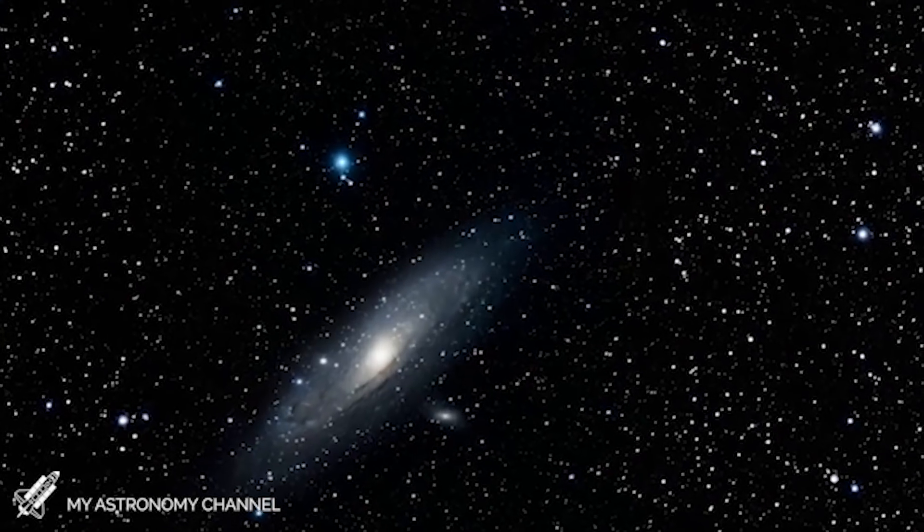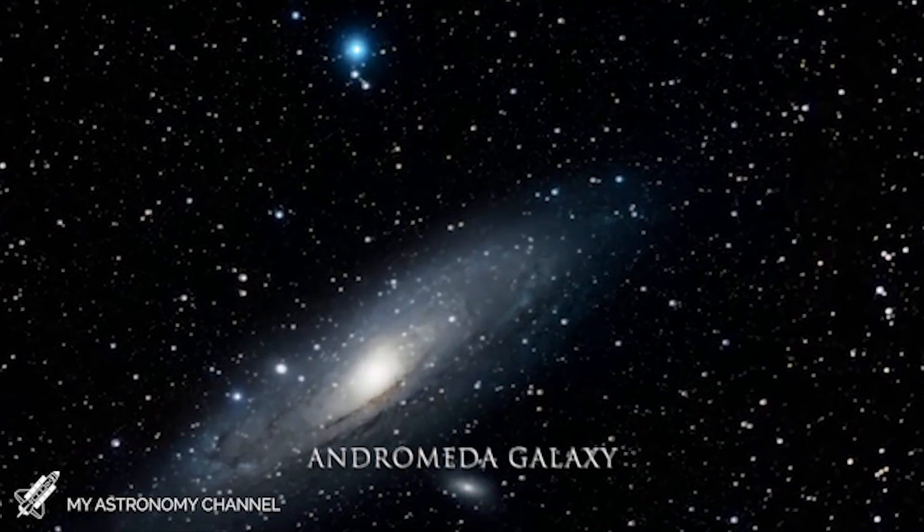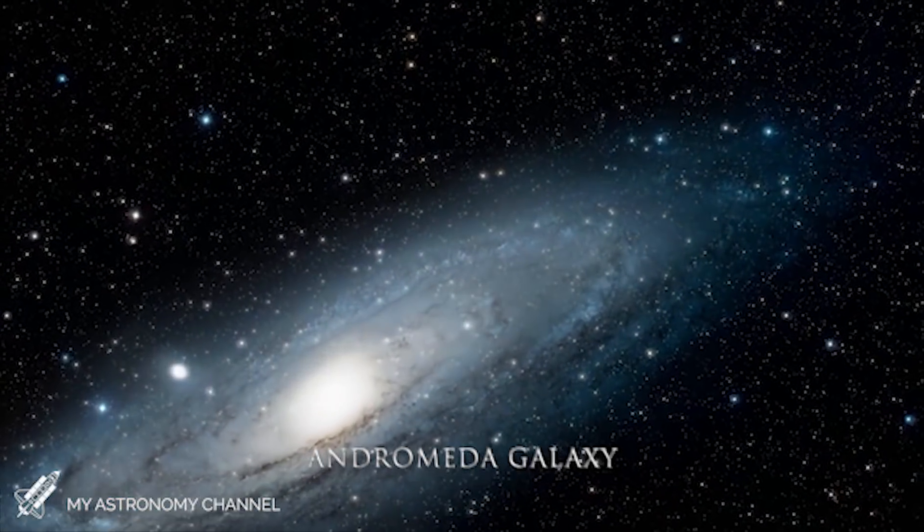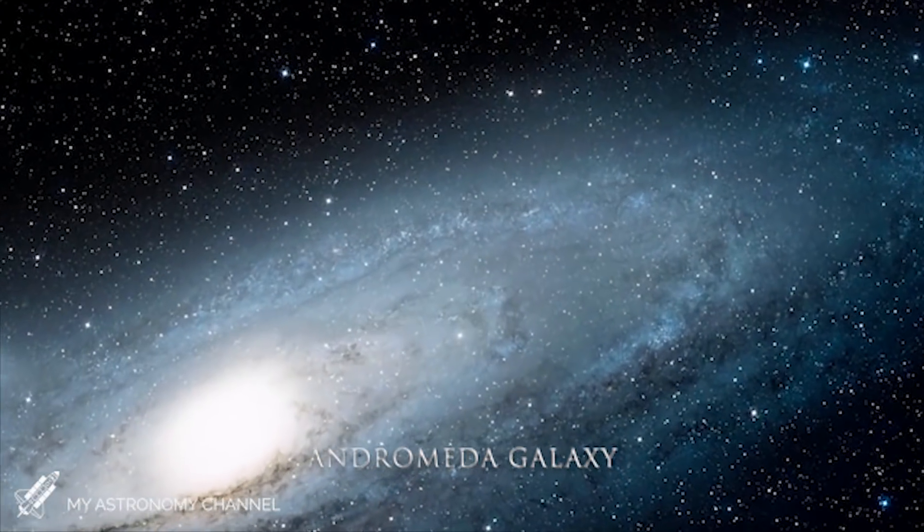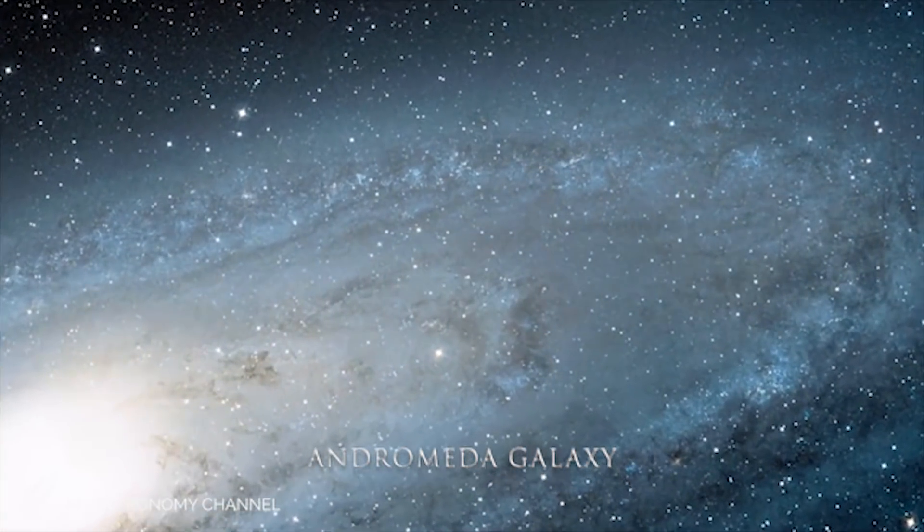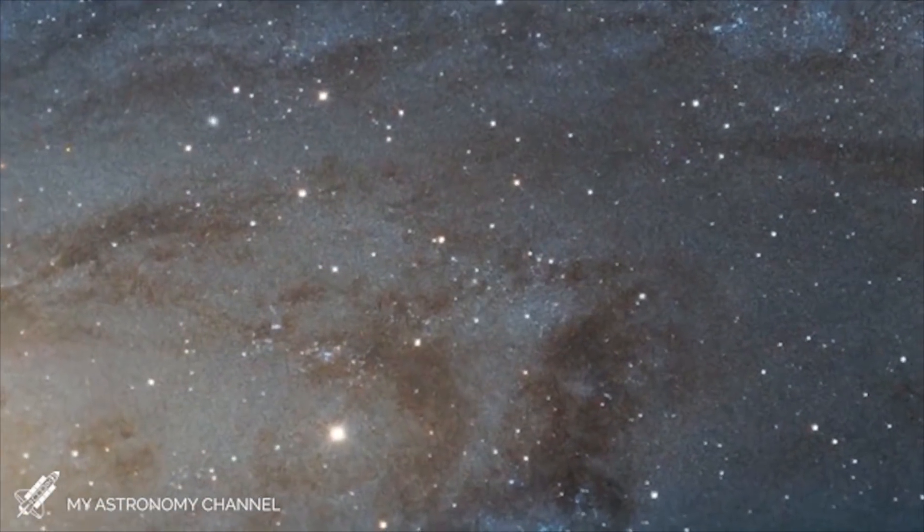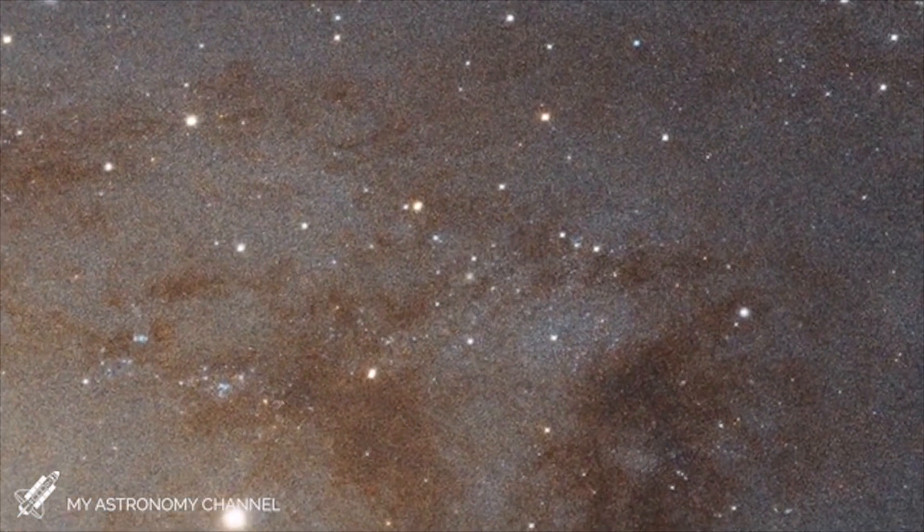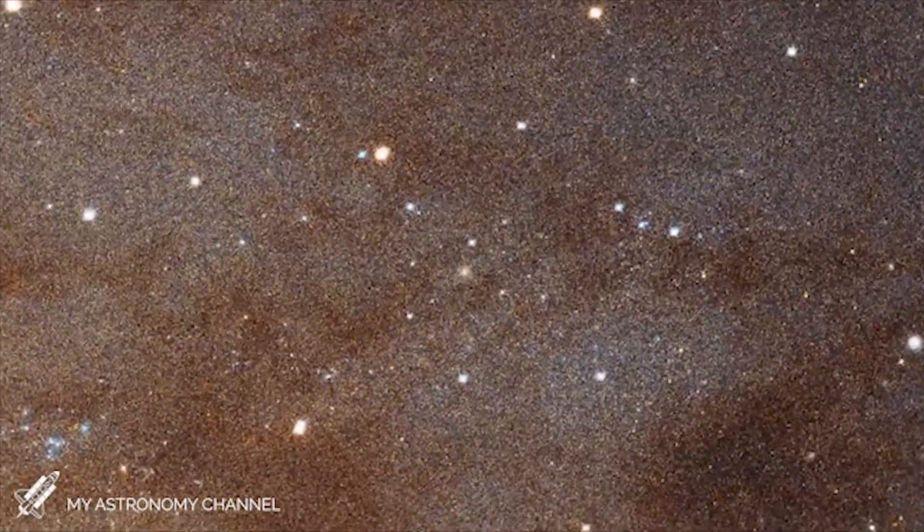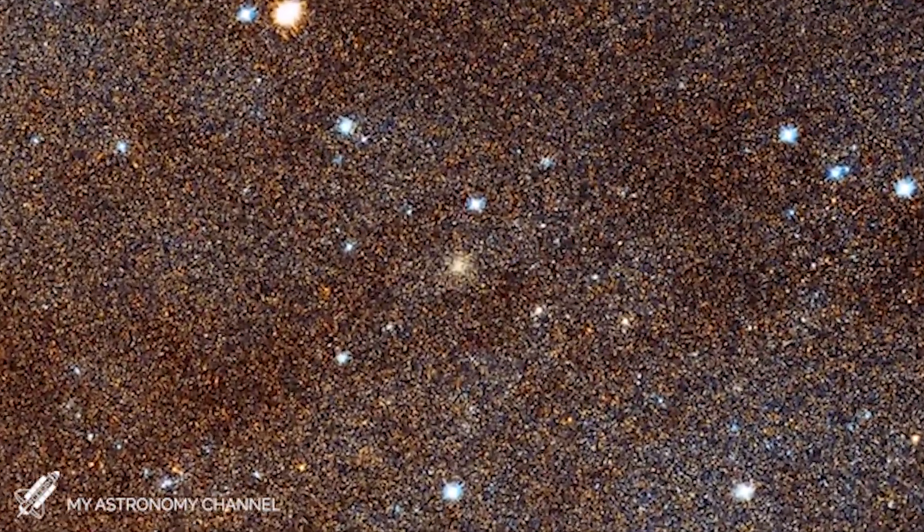To take this concept further, the nearest large galaxy to us is Andromeda, which is so big and close that you can see it in the night sky with your naked eye. What you're really seeing is thousands of billions of stars in a configuration similar to our Milky Way. However, all of those stars are about 2.5 million light years away, which means you're seeing Andromeda as it was 2.5 million years ago.